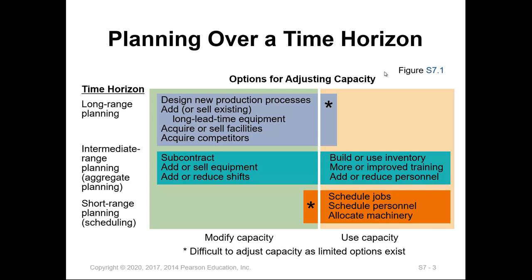As shown in the figure, for the long range, all planning will involve capacity modification with the purpose of expanding capacity through adding facilities and/or adding long lead time equipment. For the intermediate range, planning begins with modifying capacity through subcontractors, adding equipment or adding shifts, then expanding capacity by adding personnel. At this stage, we are not adding machines or expanding the facility, but accommodating demand using subcontractors, certain equipment, and shift changes.